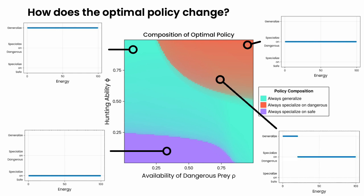But if we come down a bit and decrease both hunting ability and dangerous prey availability, we come to the policy that we saw previously, where it is best to generalize at low energy levels and to specialize on dangerous prey at higher energy levels.